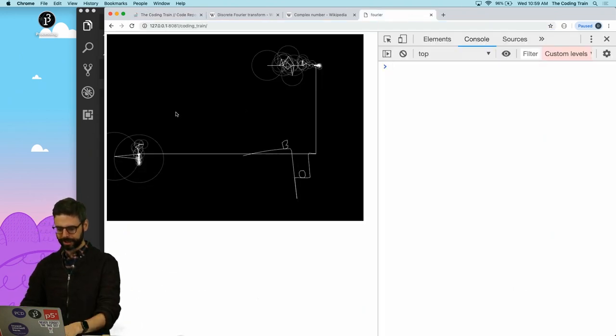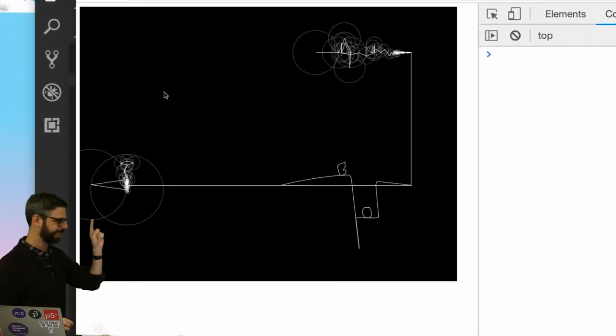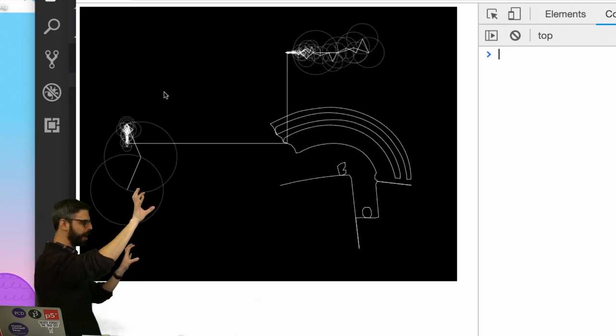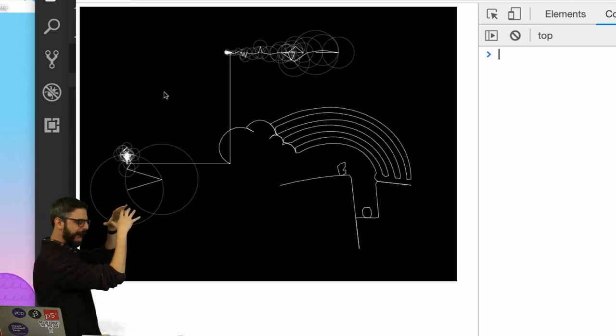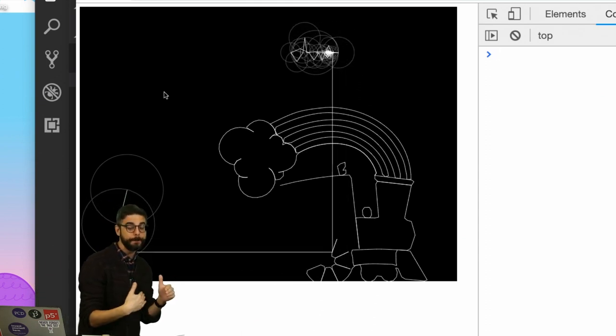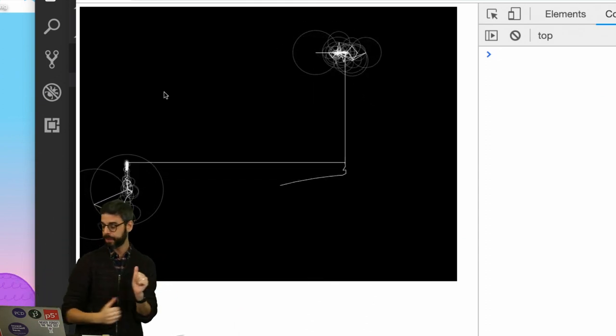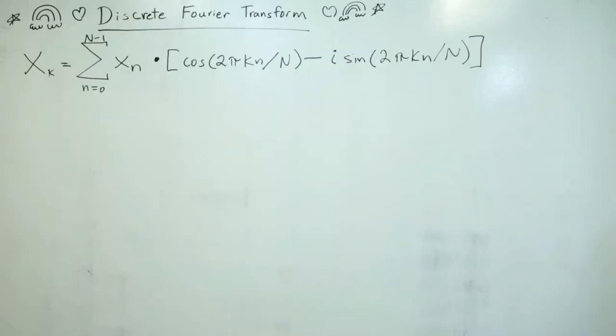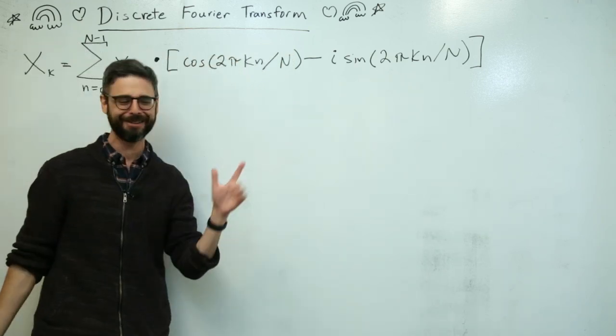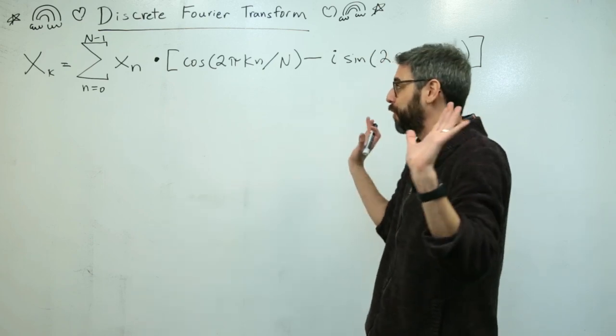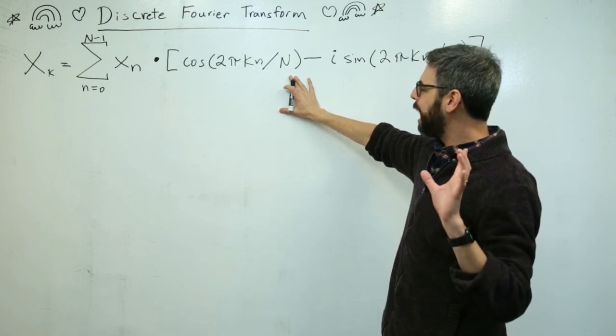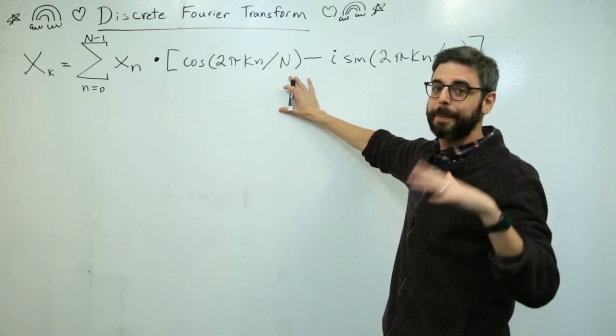All right, so what I want you to look at here from the previous coding challenge is this. This is the coding train logo being drawn by two sets of nested orbits and the frequencies, amplitudes, and phases of these orbits are all calculated from the discrete Fourier transform algorithm. The discrete Fourier transform algorithm takes, it's over here, and this is going to look like, what? Are you crazy? I'm not going to watch the rest of this video, but just stay with me, or don't stay with me, but stay with me if you feel so inclined. Don't worry if this looks crazy and weird to you. I'm going to help you through it. And actually, I did this already, and you might want to stop and go back and watch that first video.